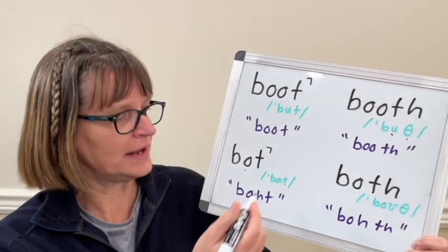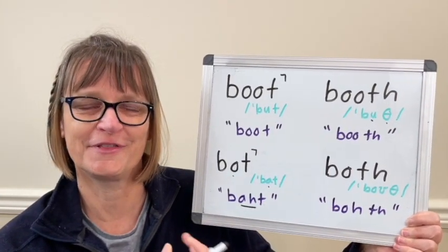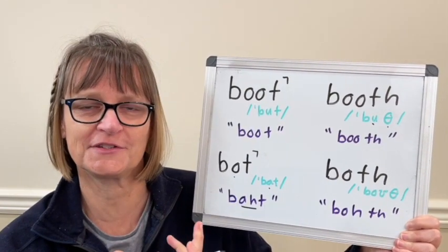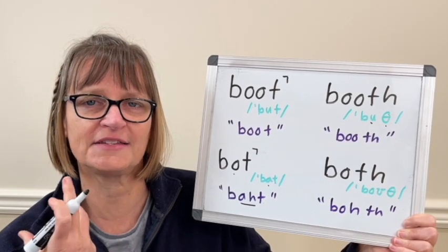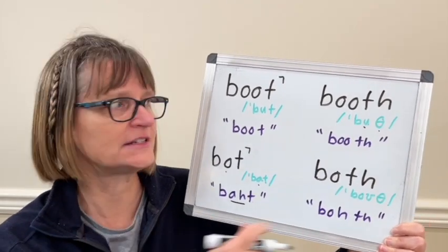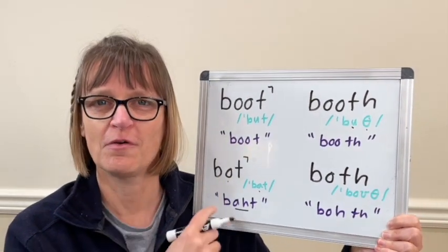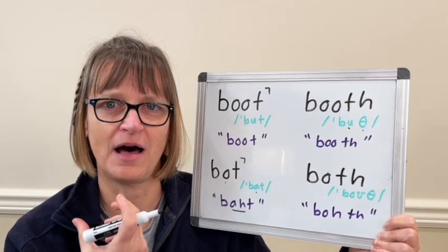Letter O in bot has the AH vowel. So I've rewritten that for you here with letters AH. Frequently when the letter O is in a stressed syllable of a word in American English, it says this open AH sound. It's not rounded. It's not like the O in both or the O in boot. And so visualizing it as an A may help you to pronounce that AH bot more easily.